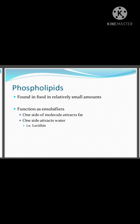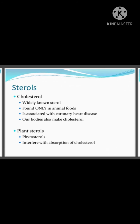Next are phospholipids, which are found in lesser amounts in food compared to triglycerides. They act as emulsifiers, helping to prepare oil-and-water emulsions; lecithin is an example. After triglycerides and phospholipids come sterols, which can be cholesterol (animal sterols) or plant sterols. Cholesterol is found only in animals and is associated with coronary heart disease; the body can also synthesize cholesterol with the help of vitamin D. Plant sterols, also called phytosterols, interfere with the absorption of cholesterol in the body.